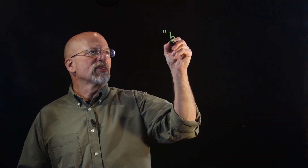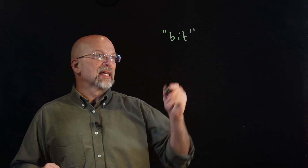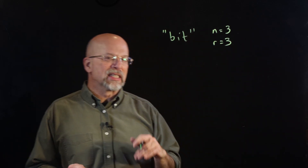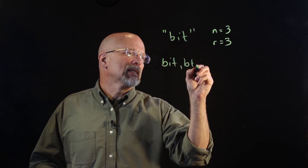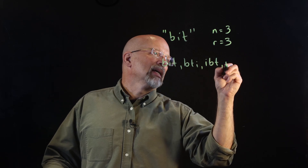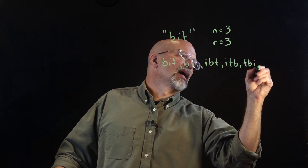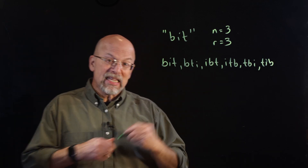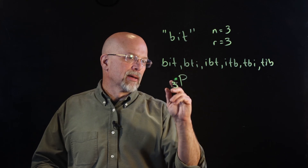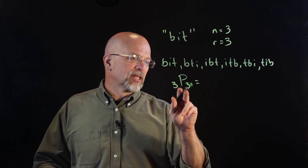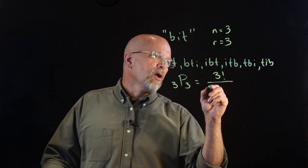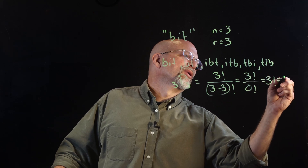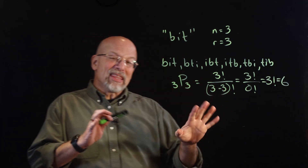Let's revisit our set made up of the letters B, I, T. We did all the possible sequences with set size 3 and sequence length 3. We came up with: BIT, BTI, IBT, ITB, TBI, and TIB. Those were our six sequences. The total was 3P3, which is 3 factorial over (3 minus 3) factorial, which is 3 factorial over 0 factorial, which equals 3 factorial, which equals 6.